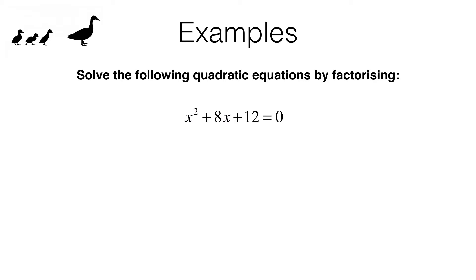If we can factorise the expression on the left then we can turn it into a problem like the ones we saw in the last video and we know how to solve those using the zero product property. Factorising the left-hand side I get x plus 6 multiplied by x plus 2, and we know that equals zero.